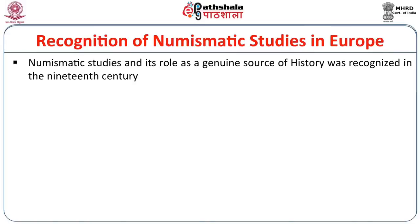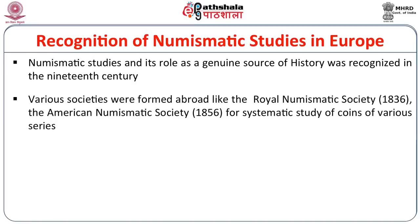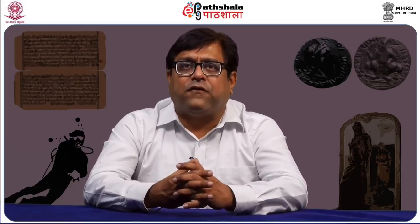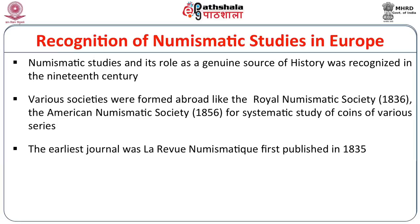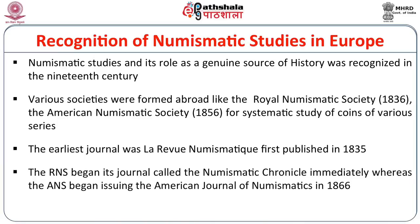This trend of collecting coins led to the recognition across Europe that coins were a genuine source of history, and this led to various societies being formed in the 19th century. Notably the Royal Numismatic Society was formed in 1836, the American Numismatic Society in 1856, and both began systematic study of coins of various series. Interestingly, the Royal Numismatic Society also began one of the earliest English journals, the Numismatic Chronicle, which began recording a number of Indian coin series. In the French-speaking world, La Revue Numismatique was first published in 1835, and it also records a number of Indo-Greek coins and rare coins found in Afghanistan.